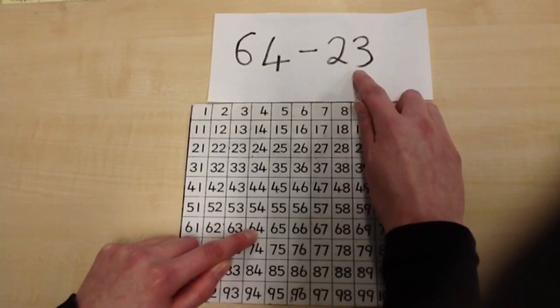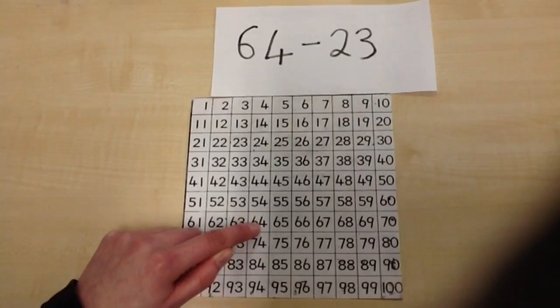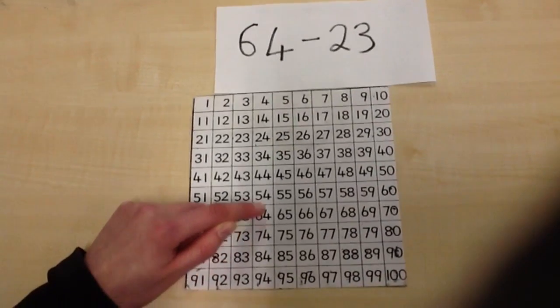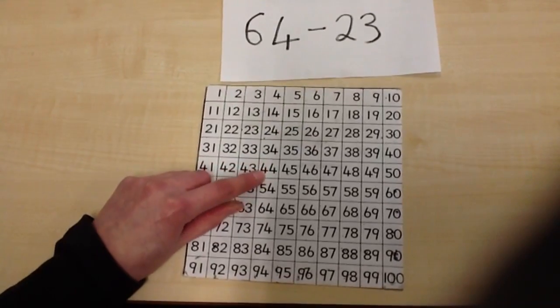And I have a look to see which number is my 10s. So at 23, the number 20, there are 2 tens. So I'm going to go back up my 100 square, 2 tens. 1, 2. That takes me to 44.